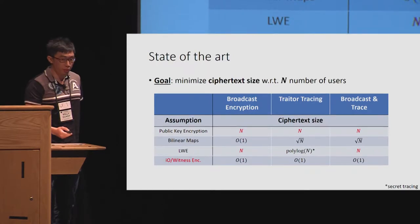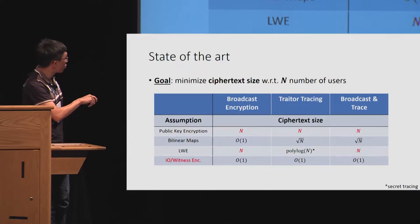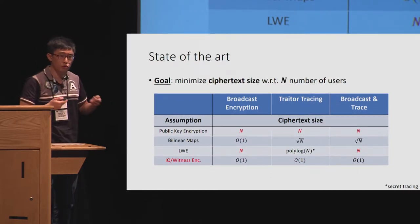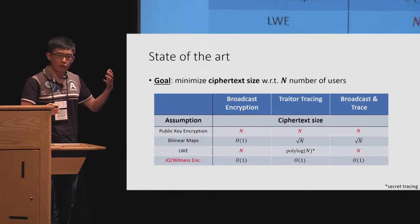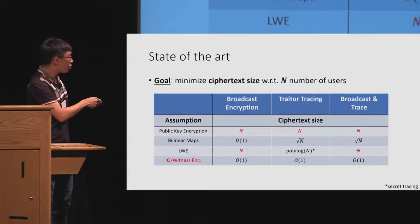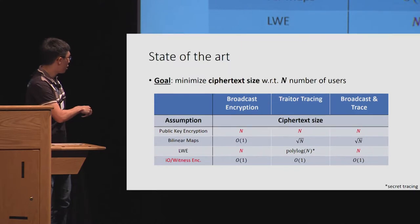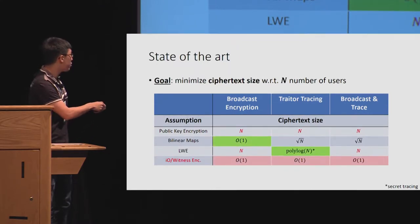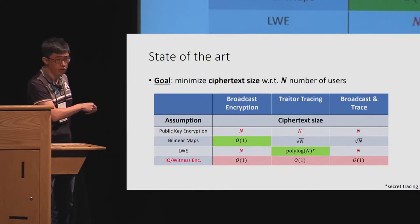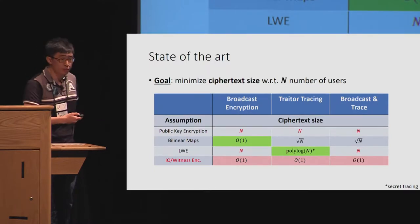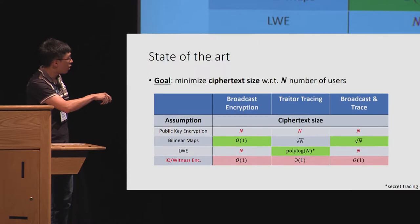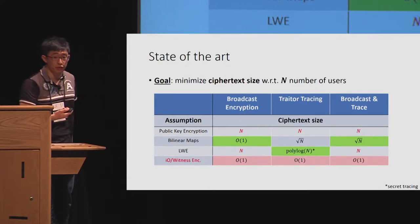Let me review previous work. The main quantity we look at to judge the quality of a scheme is scalability in the number of users. If there are many users, you want the ciphertext size to be as short as possible. From standard assumptions — ignoring IO or witness encryption — we have essentially optimal broadcast encryption from pairings and optimal traitor tracing from LWE. But the best broadcast and trace scheme we have, from more than 10 years ago, only achieves ciphertext that scales with square root of n, which is still pretty long for large n.